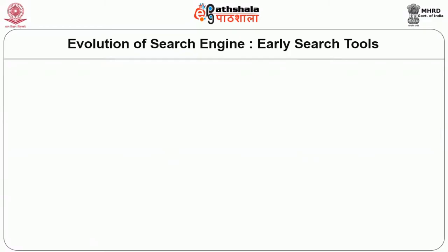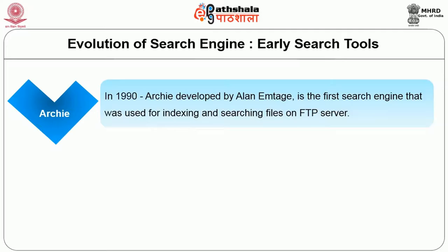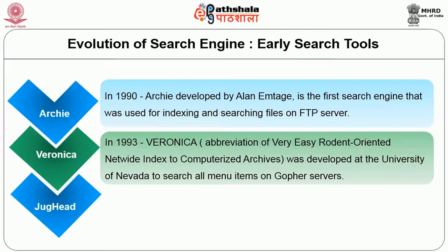Looking at the evolution of search engines, in the 1990s, Archie was developed by Alan M. Tage as the first search engine used for indexing and searching files on FTP servers. In 1993, Veronica — Very Easy Rodent Oriented Network Index to Computerized Archives — was developed at the University of Nevada to search all menu items on Gopher servers. Soon after, Jughead appeared with the same purpose, written by Rhett Jones, as a powerful Gopher search tool.